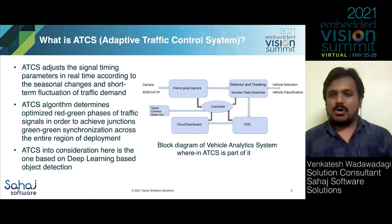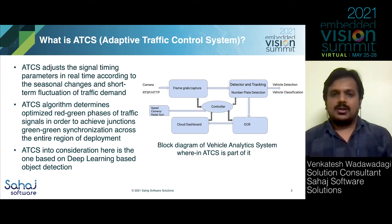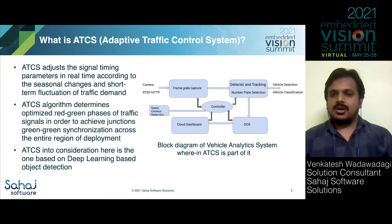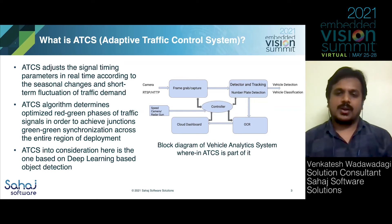Looking at the block diagram of the adaptive traffic control system, let's consider the entire vehicle analytics system. The input is camera footage or RTSP/HTTP stream that goes to the frame grab module, which captures frames one by one and passes them to the vehicle detector and tracker module. This module detects and tracks vehicles across frames and also performs number plate detection, which acts as input to the OCR — optical character recognition — module. We also have a cloud dashboard for visualizations and reports, and a controller that orchestrates and manages all the modules.